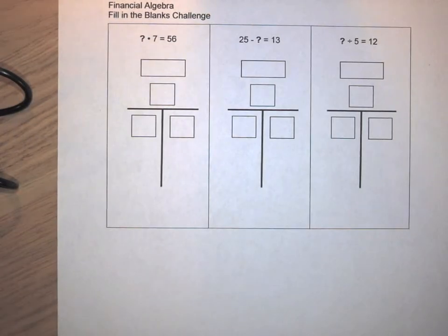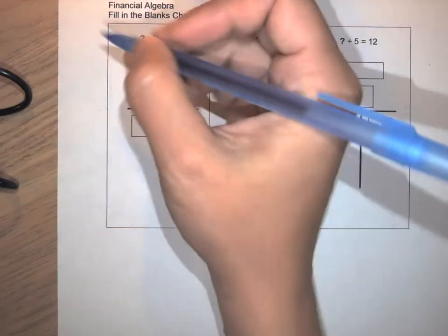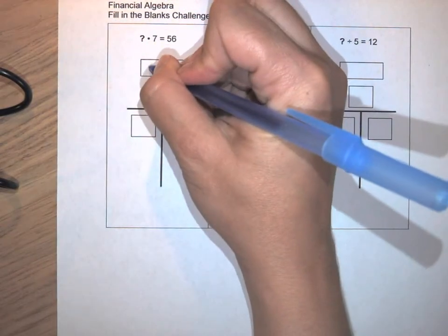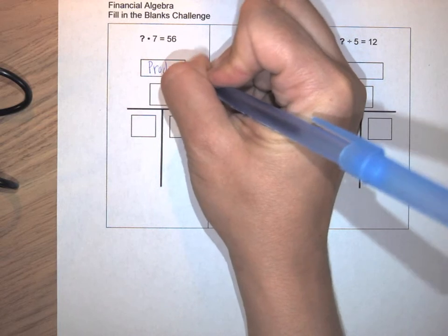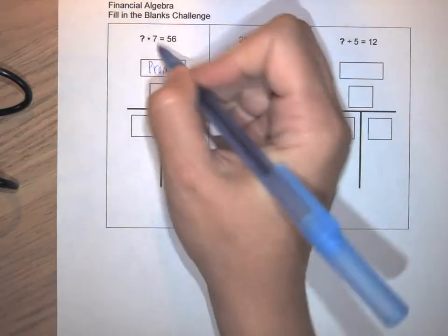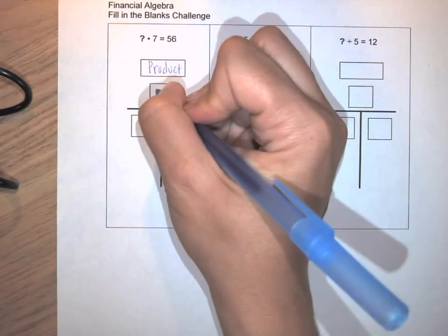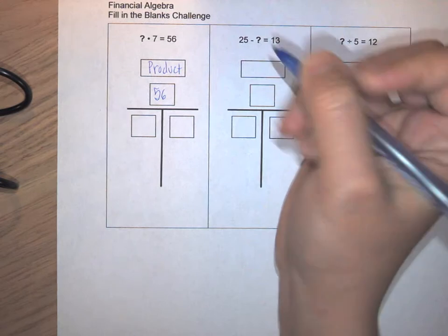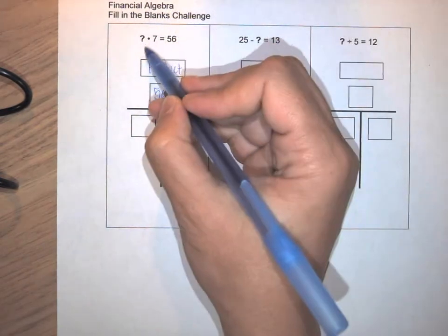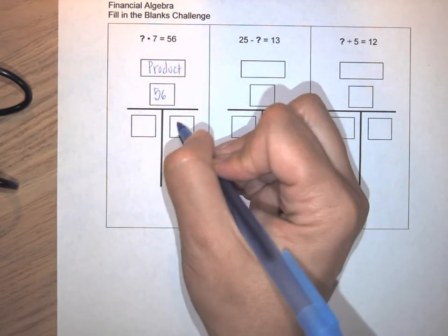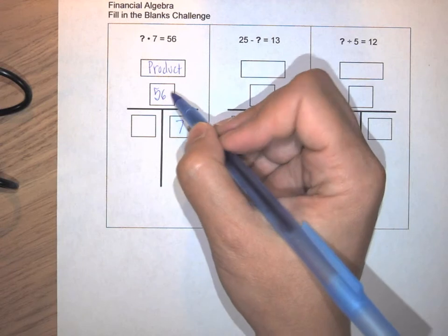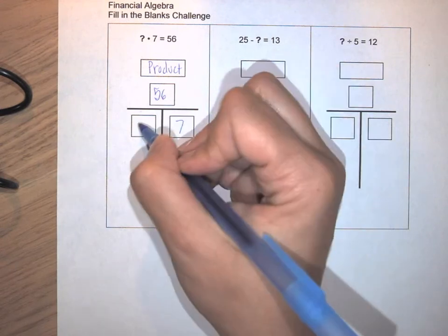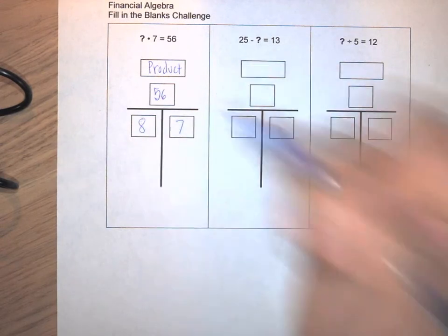Three more. I have a multiplication symbol, which means I have a product relationship. I have the equal sign, so the product is 56. I'm missing one of the factors and the other one is 7. I can use the inverse relationship to say 56 divided by 7 is 8.